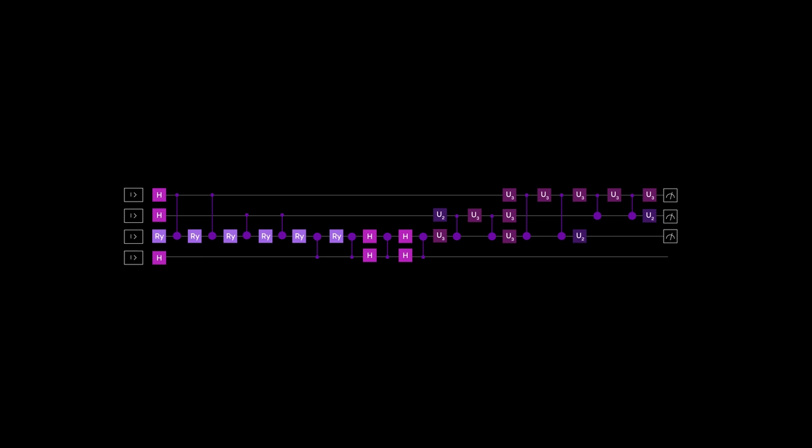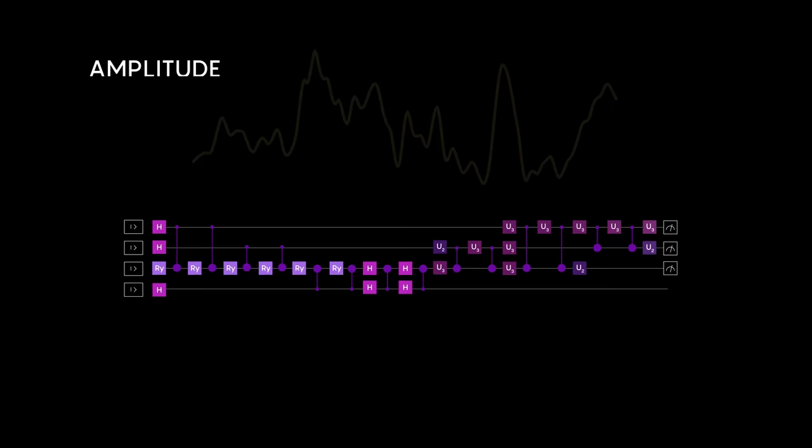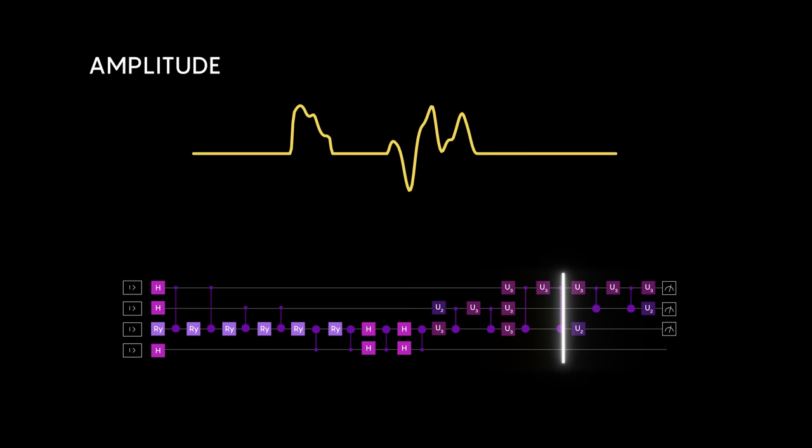This is a quantum algorithm. Scientists can harness interference by creating a deterministic sequence of qubit gates. These qubit gates cause the amplitudes to add up constructively. This means that they're mathematically guaranteed to boost the probability of seeing one of the right answers.